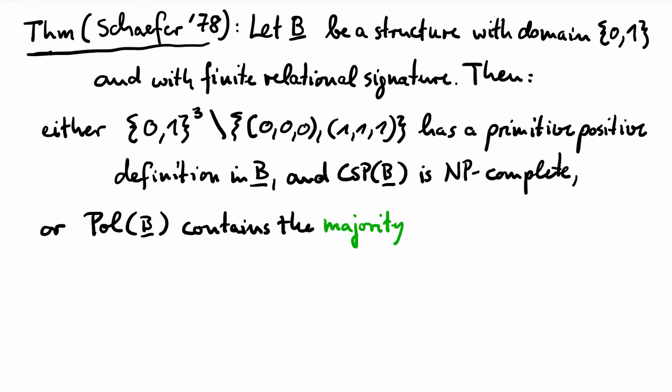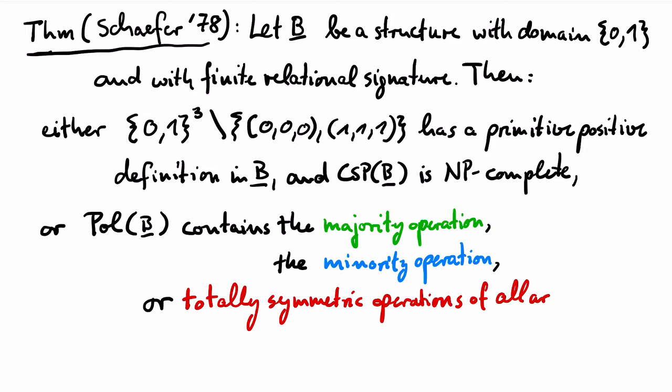Or B has a polymorphism of one of the following types: 1. A majority operation. Note that over a two-element set there is only one majority operation. 2. A minority operation. Note that over a two-element set there is only one minority operation. Or 3. Totally symmetric polymorphisms of all arities. Note that this includes the case that B has minimum as a polymorphism, or maximum, or constant polymorphisms.